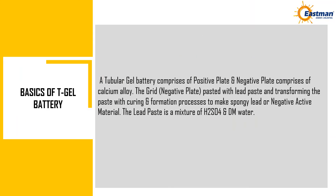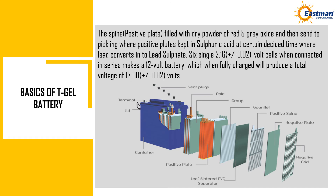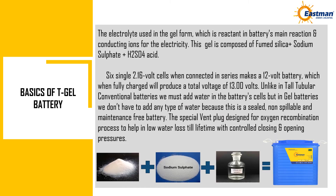Basics of Tubular Gel Battery. A tubular gel battery comprises a positive plate and a negative plate made of calcium alloy. The negative plate grid is pasted with lead paste and transformed through curing and formation processes to make spongy lead (negative active material). The lead paste is a mixture of sulfuric acid and distilled mineral water. The positive plate spine is filled with dry powder of red and gray oxide, then sent to pickling where positive plates are kept in sulfuric acid for a set time, converting lead into lead sulfate. Six single cells of 2.16 ± 0.02 volts connected in series make a 12 volt battery, which when fully charged produces a total voltage of 13.00 ± 0.02 volts. The electrolyte is used in gel form, acting as a reactant in the battery's main reaction and conducting ions for electricity.